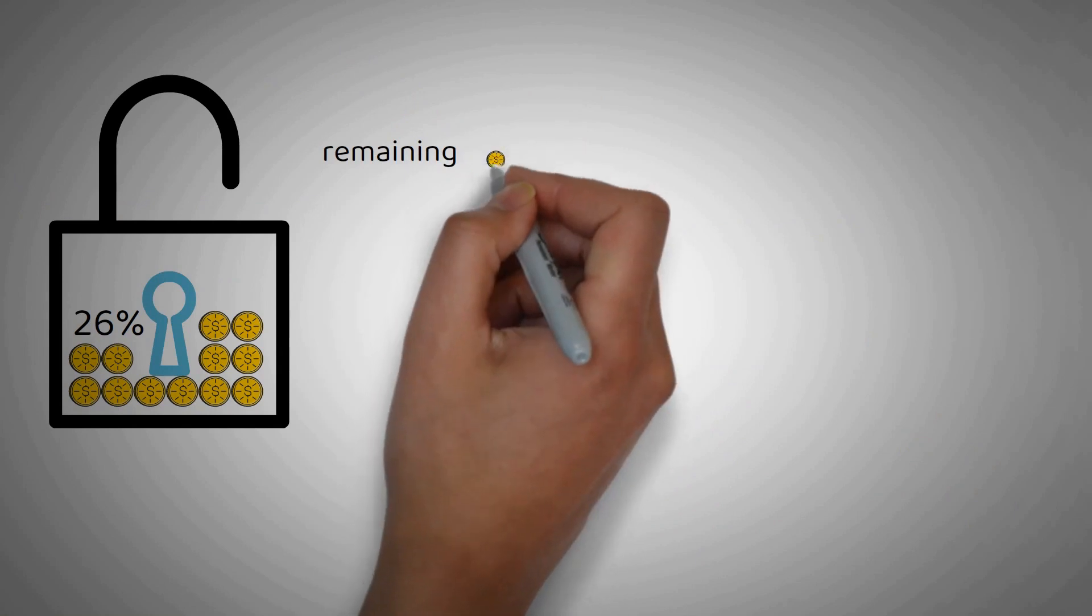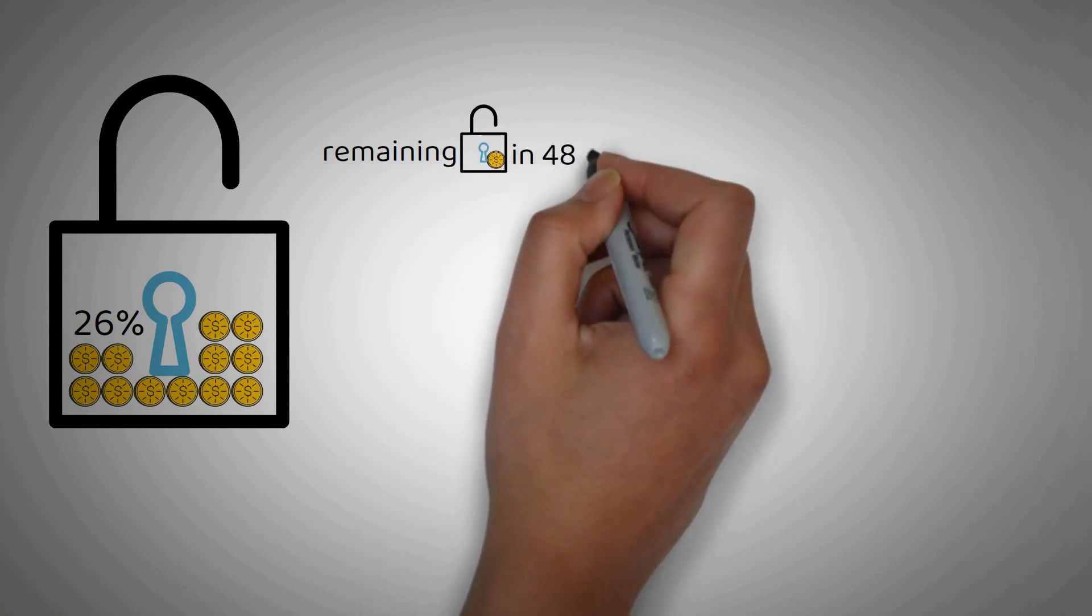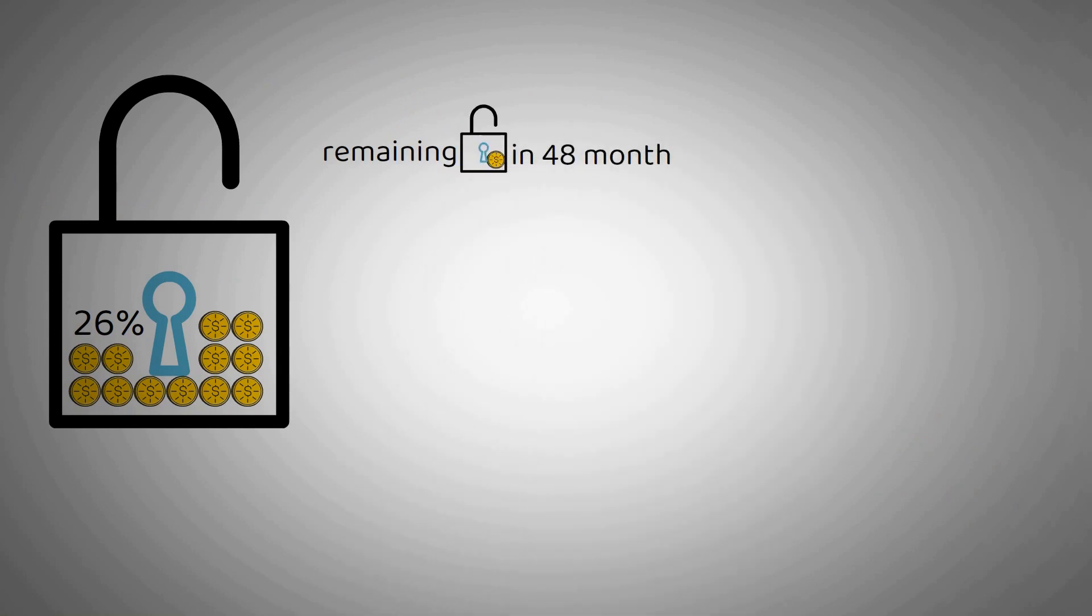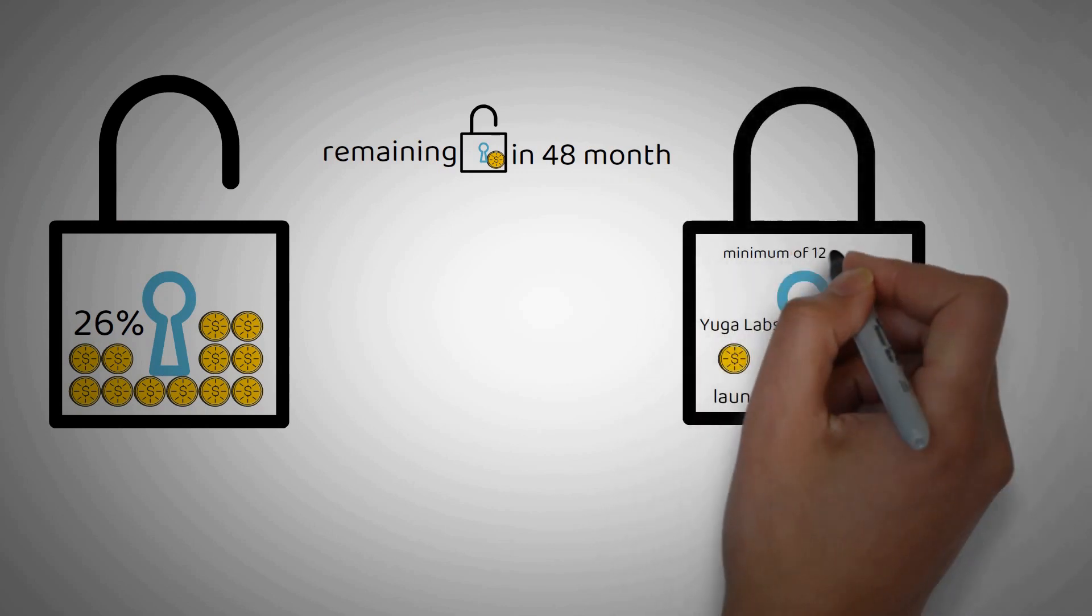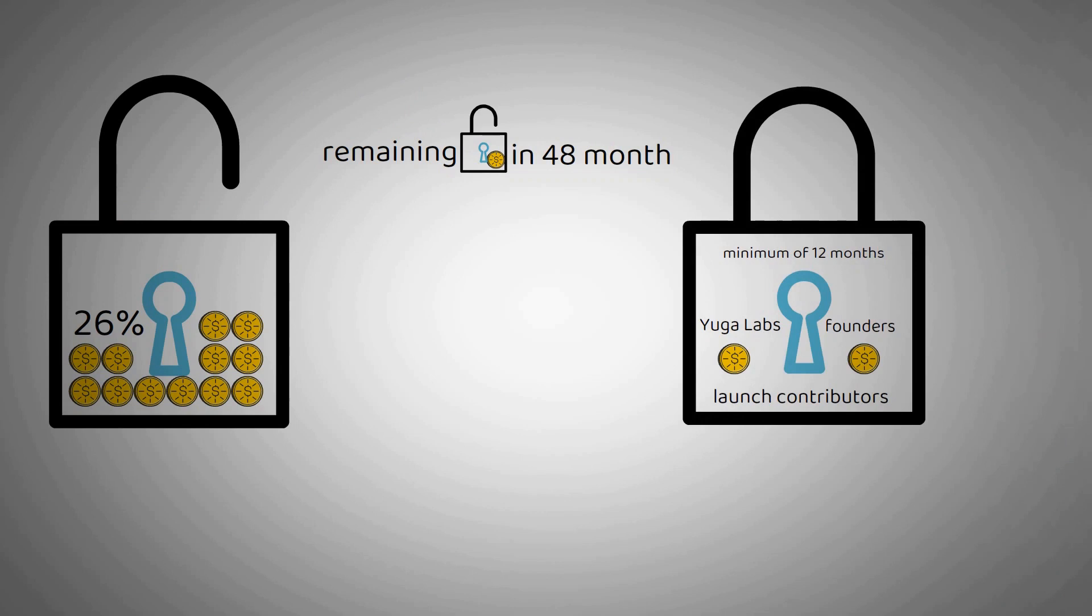The remaining tokens will be unlocked over a 48-month period. All the tokens of Yuga Labs, Founders, and Launch Contributors will be locked for a minimum of 12 months. The unlocking schedule is stable, ensuring that there is no excessive selling pressure on the tokens during any particular period. An average of 1.5% of the tokens are unlocked each month.